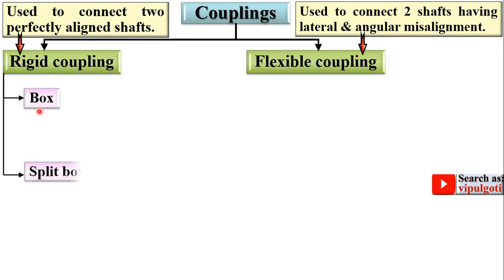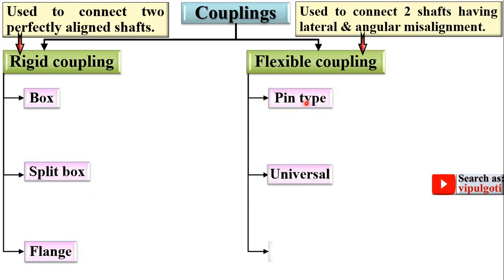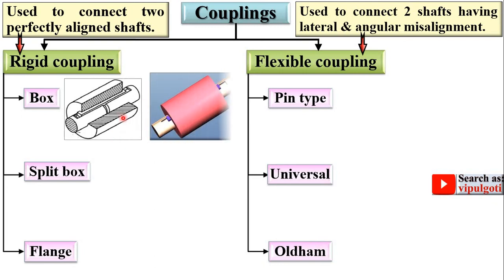Rigid coupling is further classified as box coupling, split box coupling (also called split muff coupling), and flange coupling. For box coupling, the two shafts are connected with the help of a muff or box, and that is why it is called box coupling.